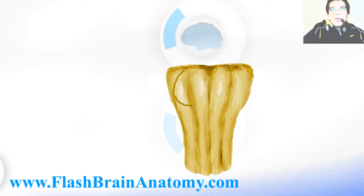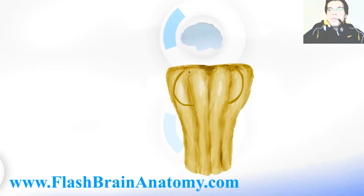Then we have these round bodies, a bit more lateral from the pyramids. They are called the olivary bodies — elevations made by the olivary nucleus inside. The olivary bodies are separated from the pyramids of the medulla oblongata by the anterolateral sulcus. This sulcus here and over there was the anterolateral sulcus. This was the median fissure.